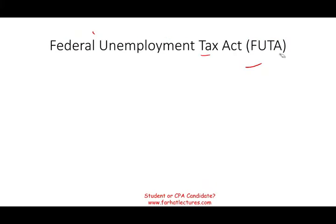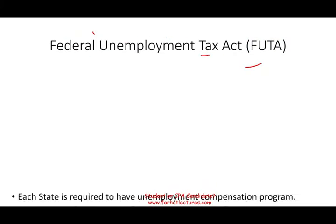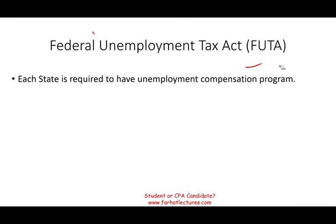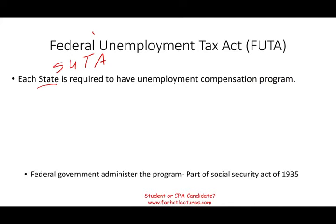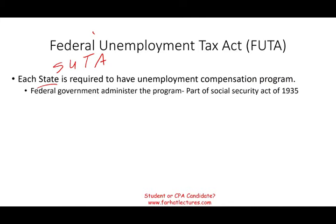So what is the Federal Unemployment Tax Act all about? Each state — and that's why we have to talk about the state — is required to have an unemployment compensation program. Simply put, if you lose your job, you'll be able to collect. It's a social safety net. The federal government administered the program, which started as part of the Social Security Act of 1935. FICA is also part of the Social Security Act — it's all part of when the government was trying to get the country out of the Great Depression, trying to create those social nets.